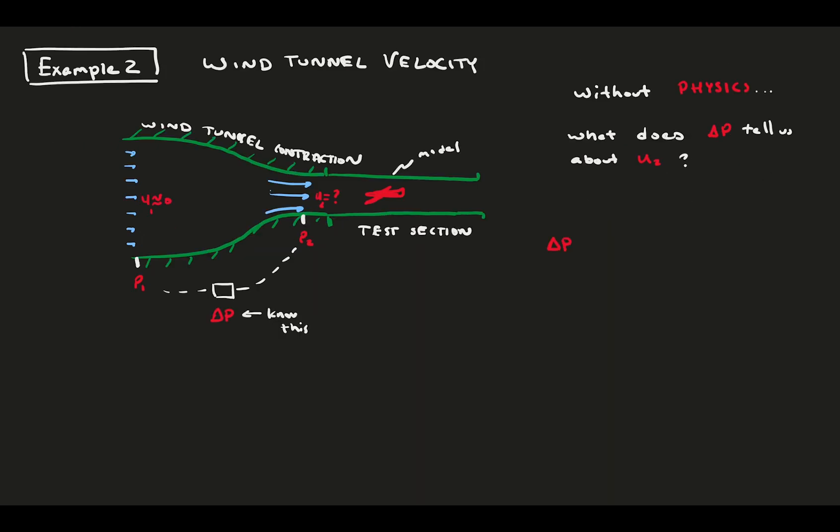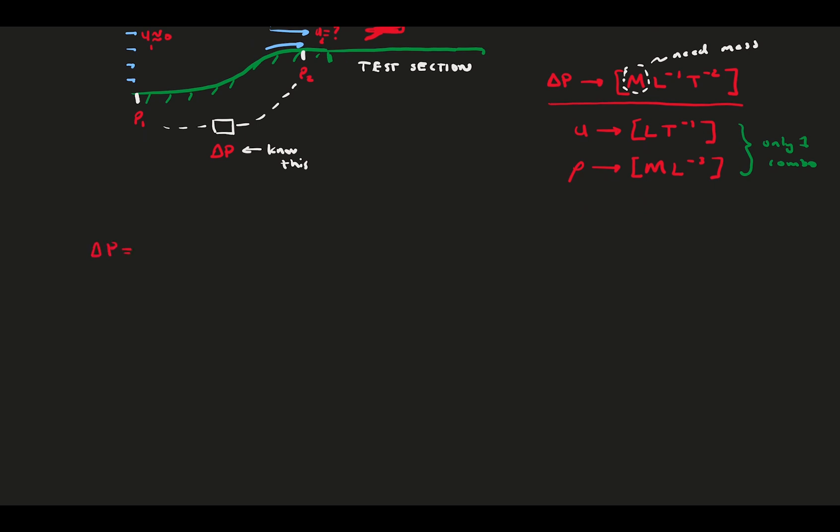Let's see if, without physics, we can determine how the velocity changes with the pressure difference. Gather our important parameters and write out the base dimensions. Notice that this pressure has mass in it, so we need more than just velocity. Like last time, we looked to fluid density for a mass that we need. In this case, there is only one combination of parameters to try. Our goal is to get delta p as a function of u and rho. We assume the general form with a constant out front and exponents a and b. Write the equation for the dimensions, distribute the exponents, and gather the like dimensions.